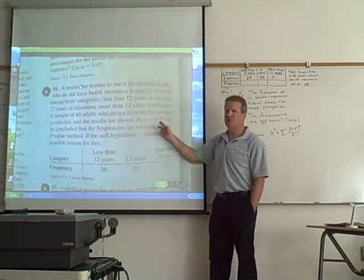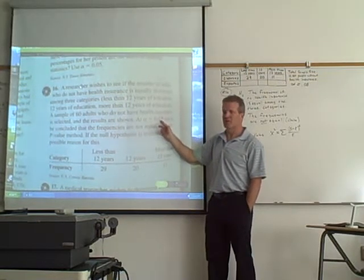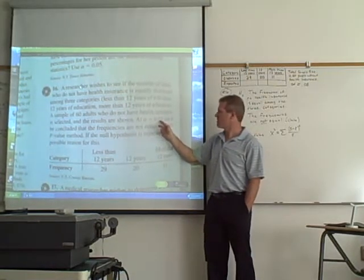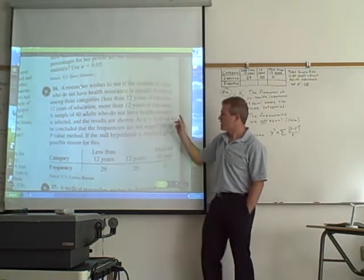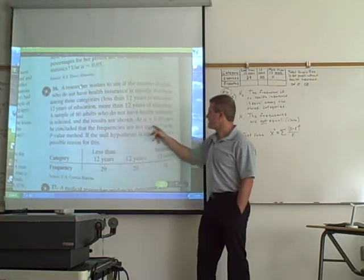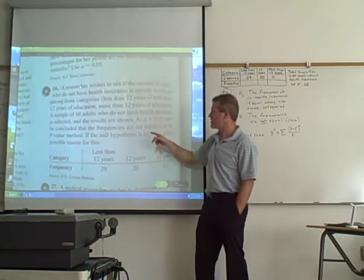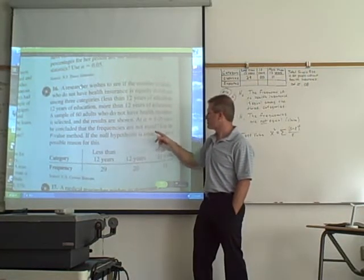At alpha equal 0.05, that means you have a 5% chance of type 1 error. So 5% chance that we will reject the null even if it's true. Can it be concluded that the frequencies are not equal? Use the p-value method.